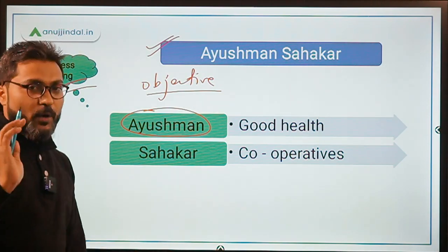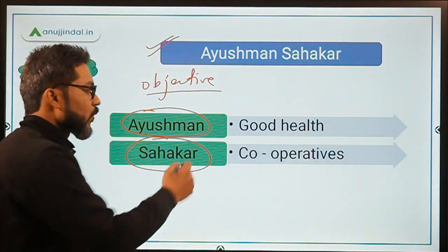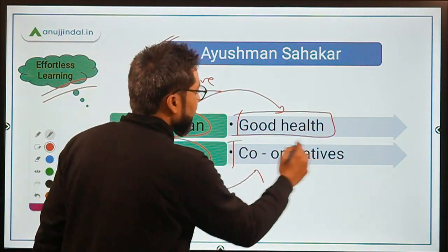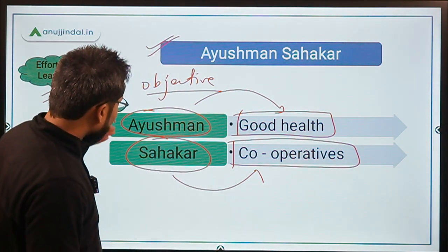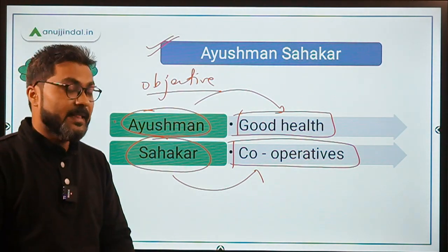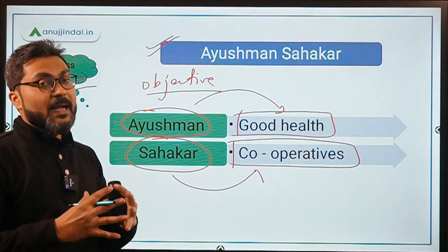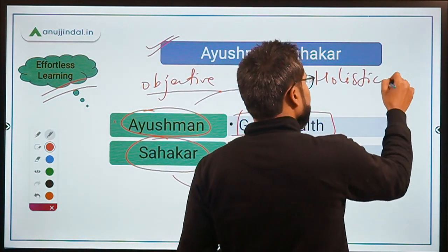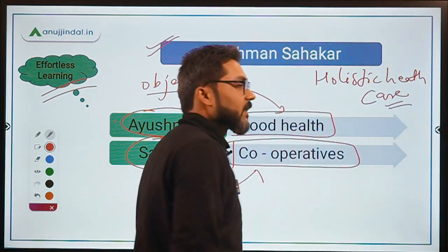There are two important words in the name of the scheme: Ayushman and Sahikar. Ayushman means good health, and Sahikar means cooperative or cooperative society. Through the meaning of these two words, we can infer that the government wants to promote good health with the help of cooperative societies, or in broader terms, promote holistic healthcare through cooperatives.